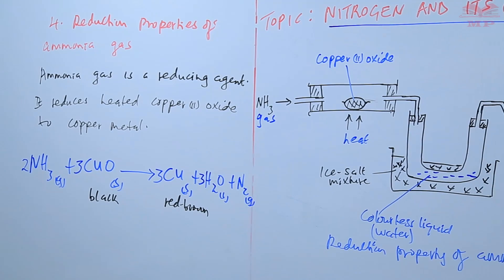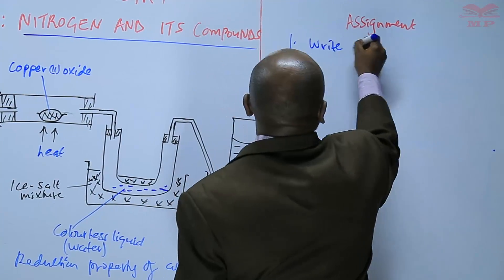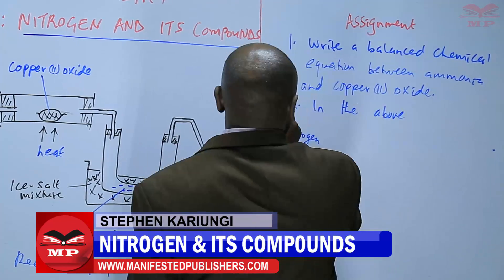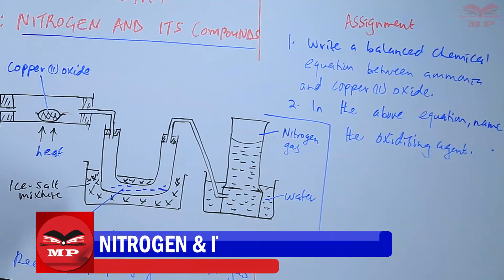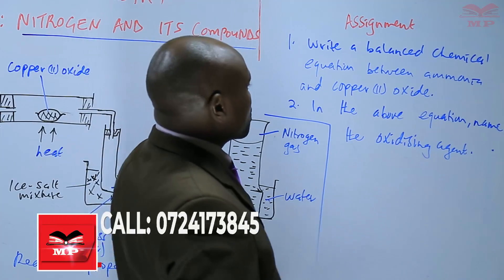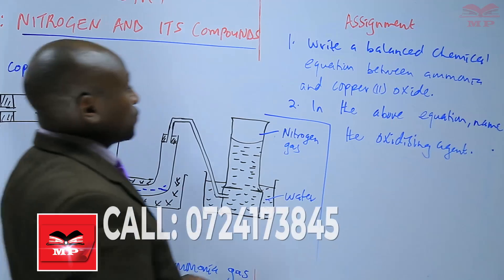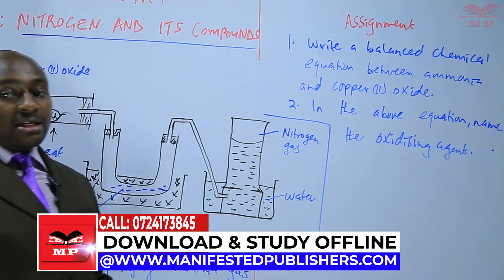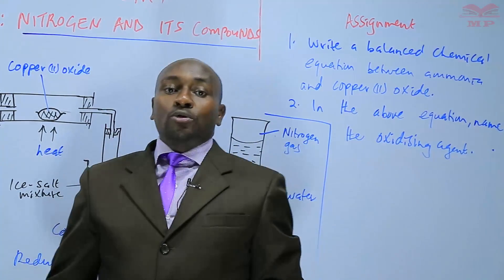Assignment: first question — write a balanced chemical equation between ammonia and copper(II) oxide. Second question — in the above equation, name the oxidizing agent. We will stop there until next time. Goodbye.